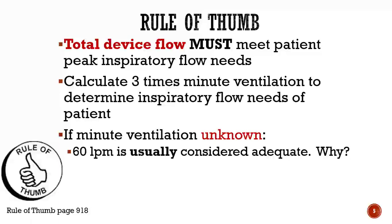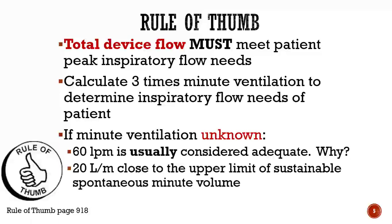The reason we use 60 liters as the default is because 20 liters per minute is close to the upper limit of anybody's sustainable spontaneous minute volume. So if your patient has Cheyne-Stokes breathing, an irregular breathing pattern, or you have no idea what their actual minute ventilation is, you can use 60 liters and that will ensure your device is truly a high flow device.